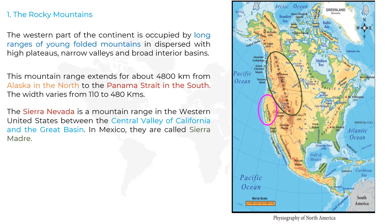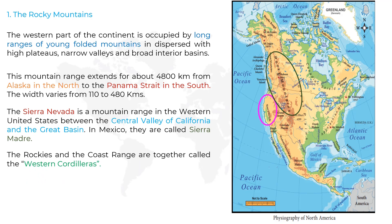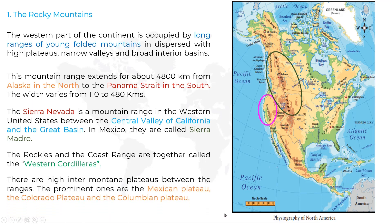In Mexico, they are called Sierra Madre. The Rockies and the Coast Range are together called the Western Cordilleras. There are high inter-mountain plateaus between the ranges. The prominent ones are the Mexican Plateau, the Colorado Plateau, and the Colombian Plateau.